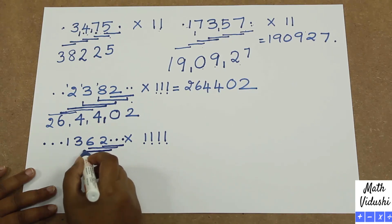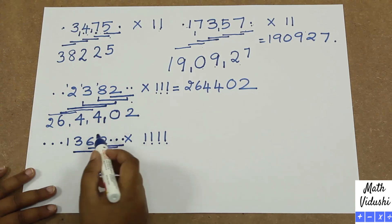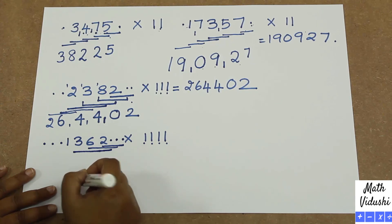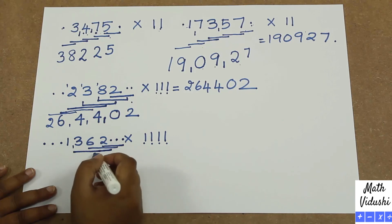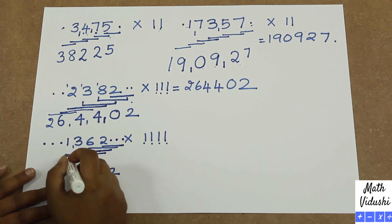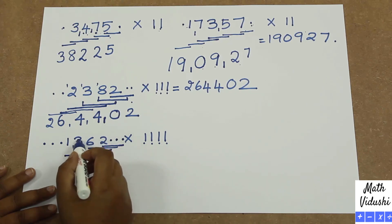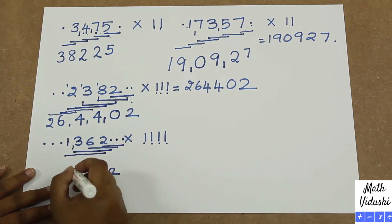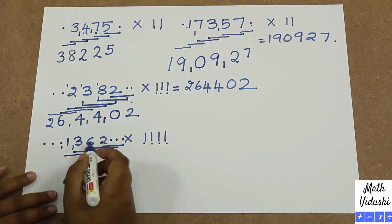Then taking 4 numbers at a time: 2 plus 6 is 8, plus 3 is 11. So you write the units place 1 and put the carryover. Then with the carryover: 8 plus 3 is 11, plus 1 is 12, plus 1 is 13. So you write 3 here and add a 1 carryover.